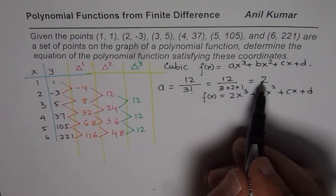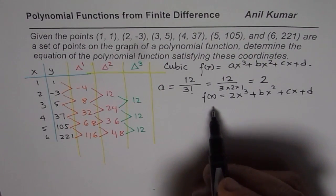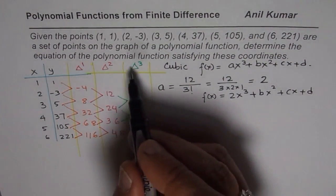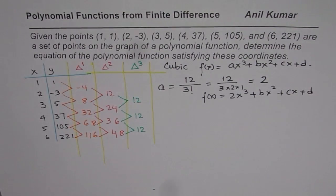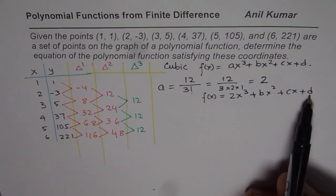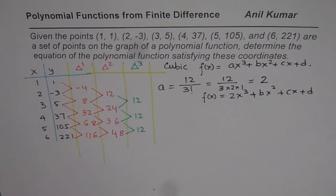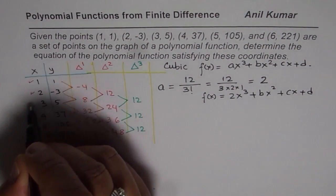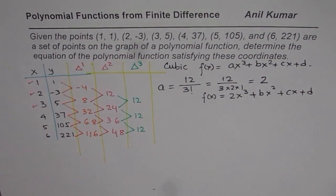As you see, we found a not by solving simultaneous equations, rather using the finite difference. So we now need to find only b, c and d. To find b, c and d, we need to work with three equations. So we will select these three points to work with.